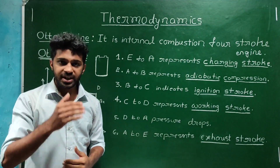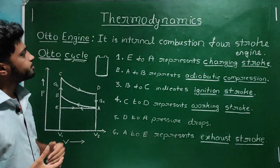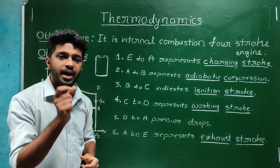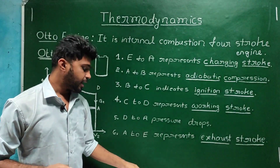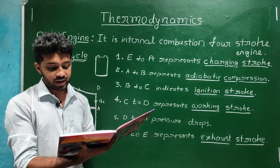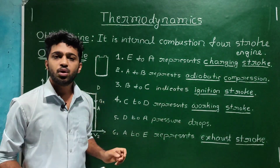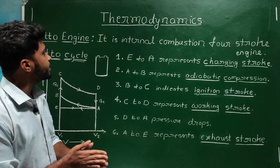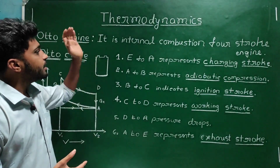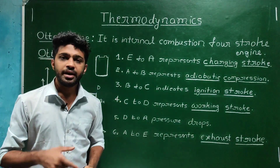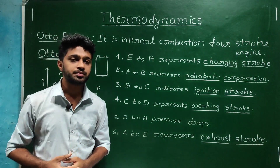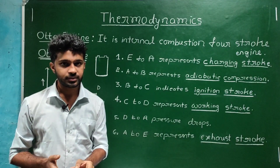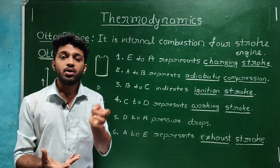Let us start now and begin with the Otto engine. The Otto engine is an internal combustion engine having four strokes, and it was designed by German engineer Nicholas Otto. Hence the name is Otto engine. In this engine, each stroke is also called a phase or stage, and the engine has four such phases.